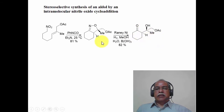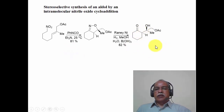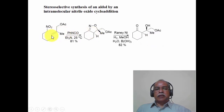What is important about this reaction is its stereoselectivity. The hydrogen and the methyl group are trans with respect to each other, and this is retained as trans during the course of the reaction. The cleavage of the nitrogen–oxygen bond is also carried out in a stereoselective manner without racemization of that center. Overall, it constitutes a stereoselective synthesis of an aldol derivative by means of an intramolecular 1,3-dipolar cycloaddition reaction of a nitrile oxide with an olefin built into the molecule.